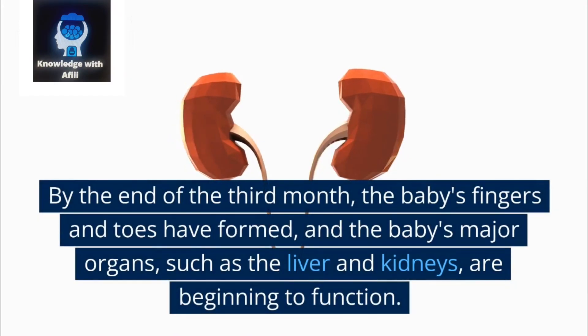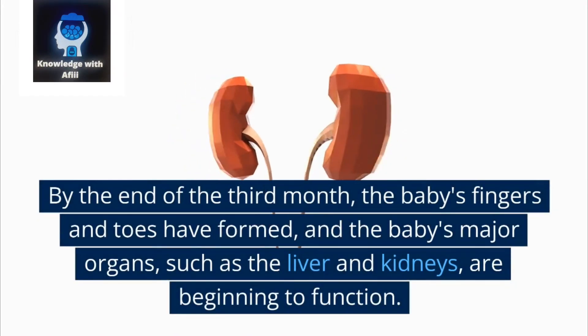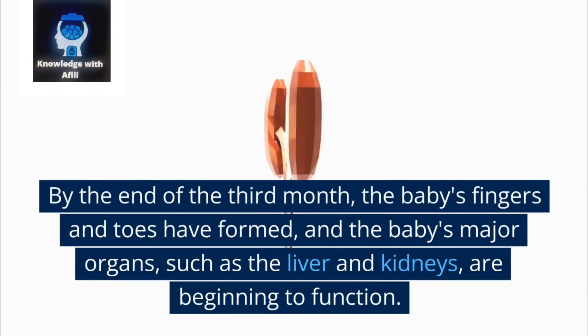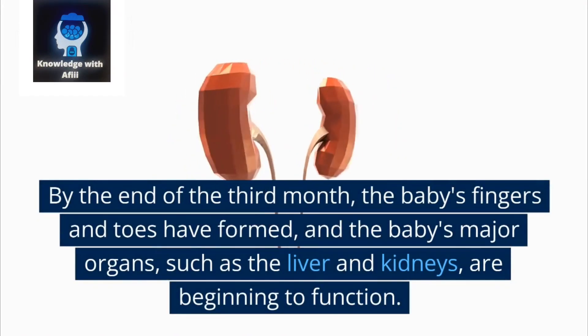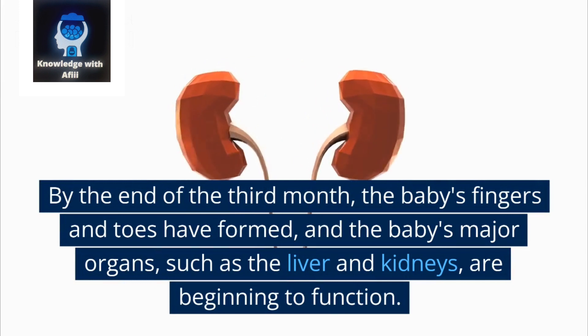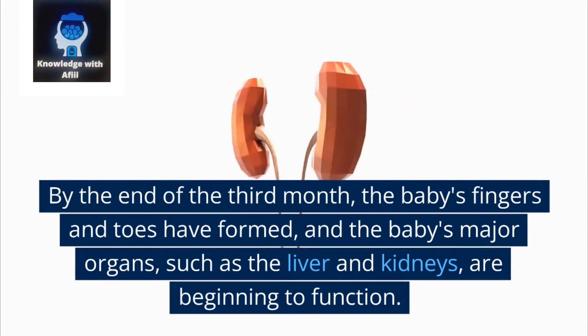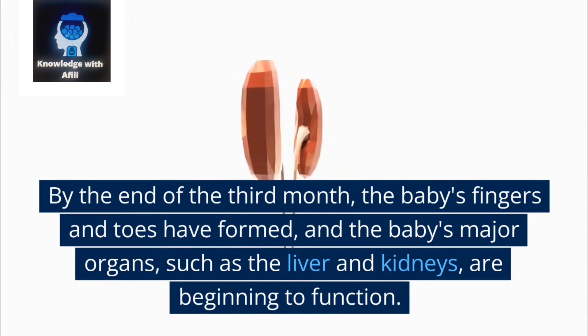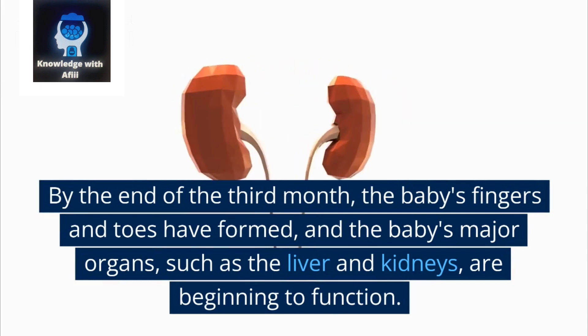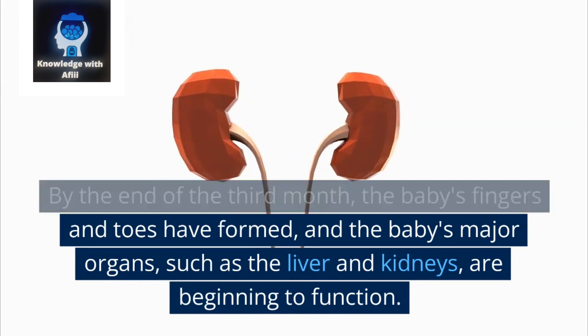By the end of the third month, the baby's fingers and toes have formed, and the baby's major organs, such as the liver and kidneys, are beginning to function.